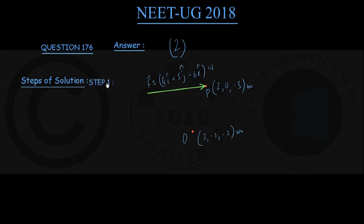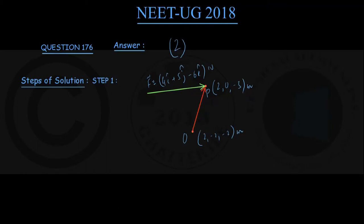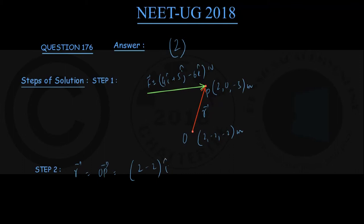Step 1 is the figure already drawn. Step 2: find the position vector of the point of application P about origin O. We draw an arrow from O to P, and this red arrow represents position vector R of the application point of the force F about origin O. R is the vector OP — P is the point where the force is applied, O is the origin about which the torque is measured.